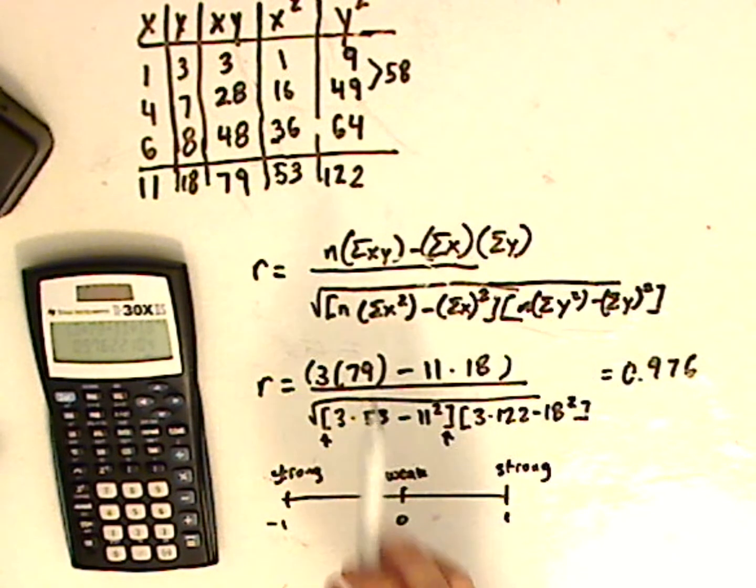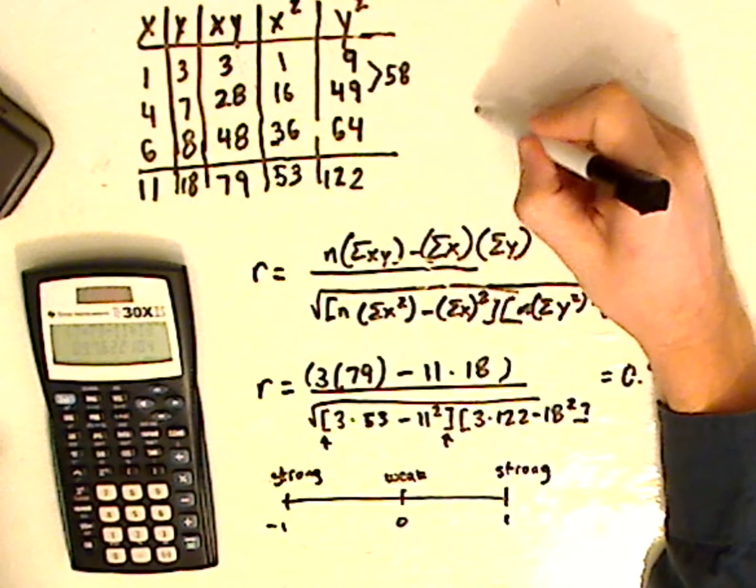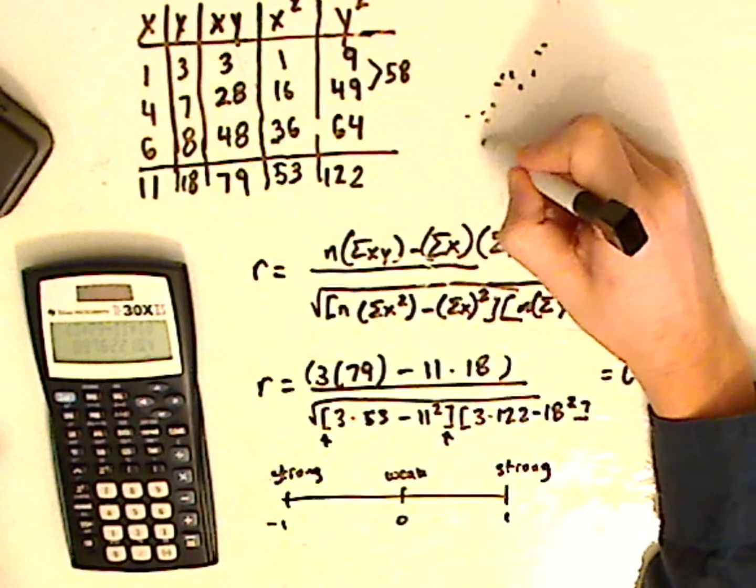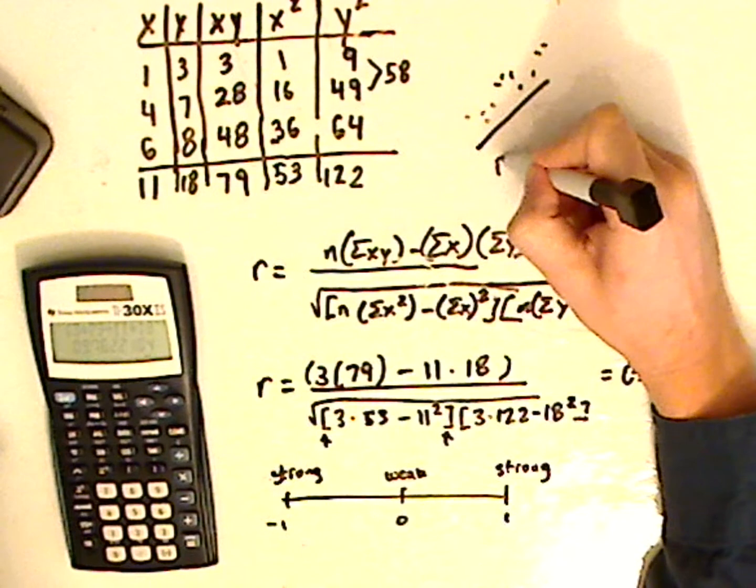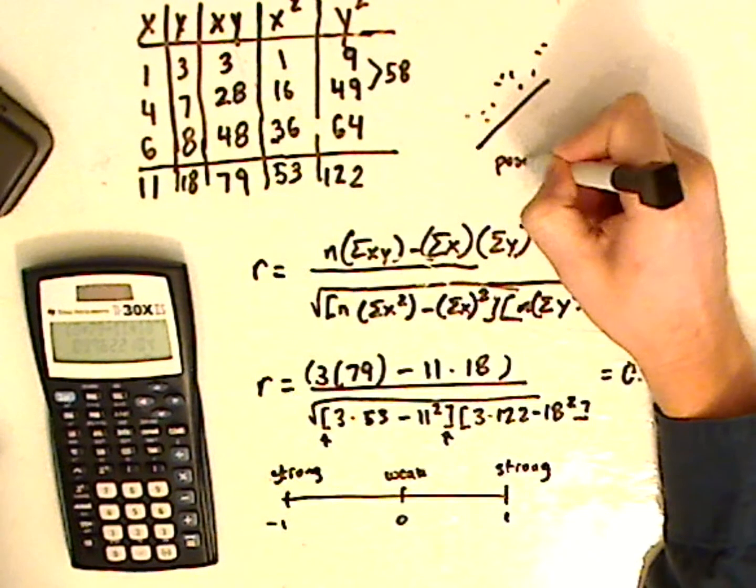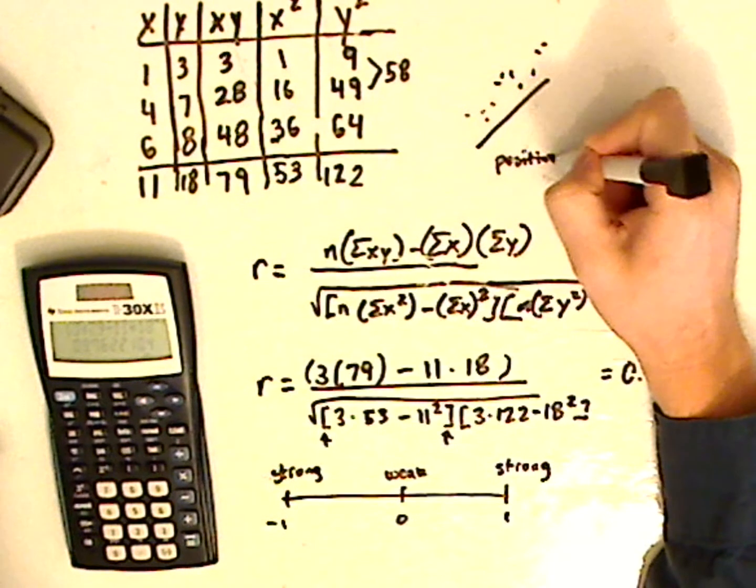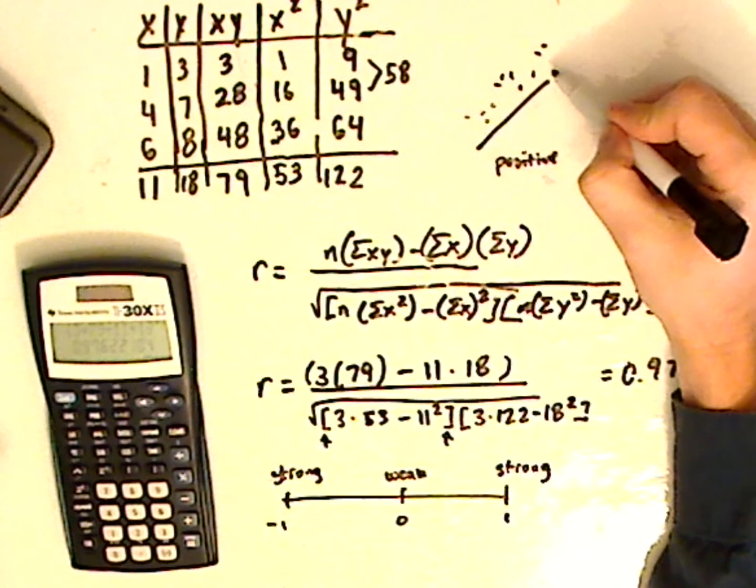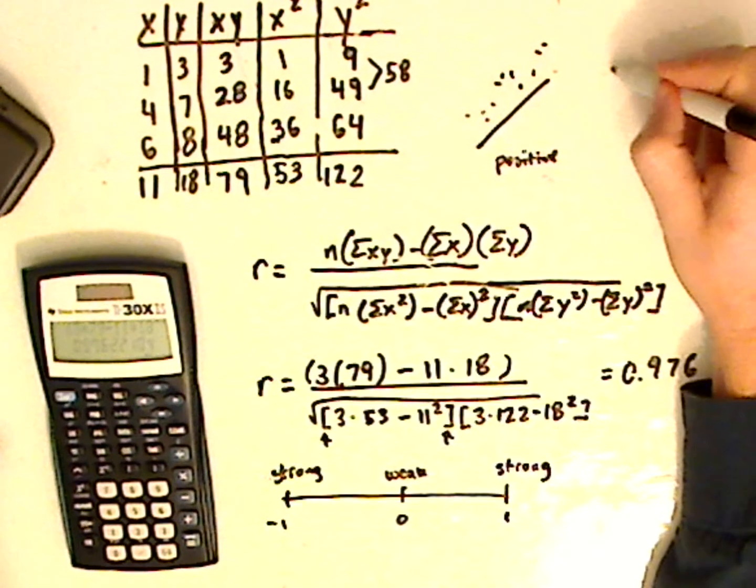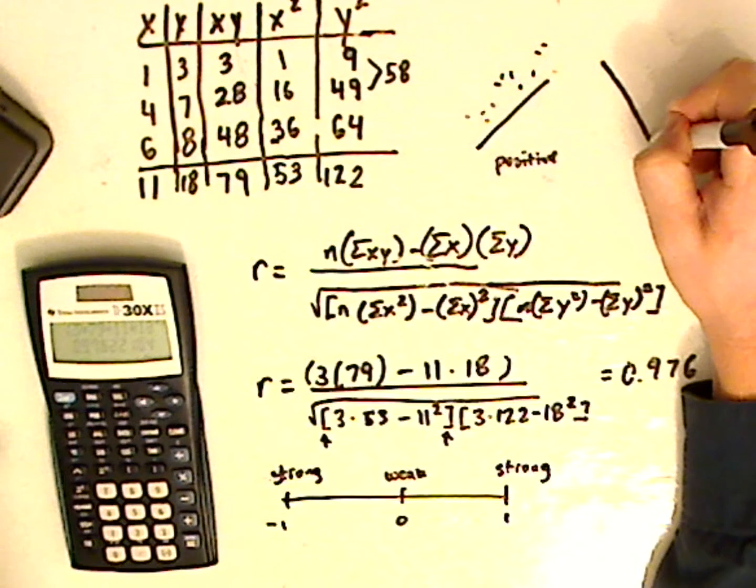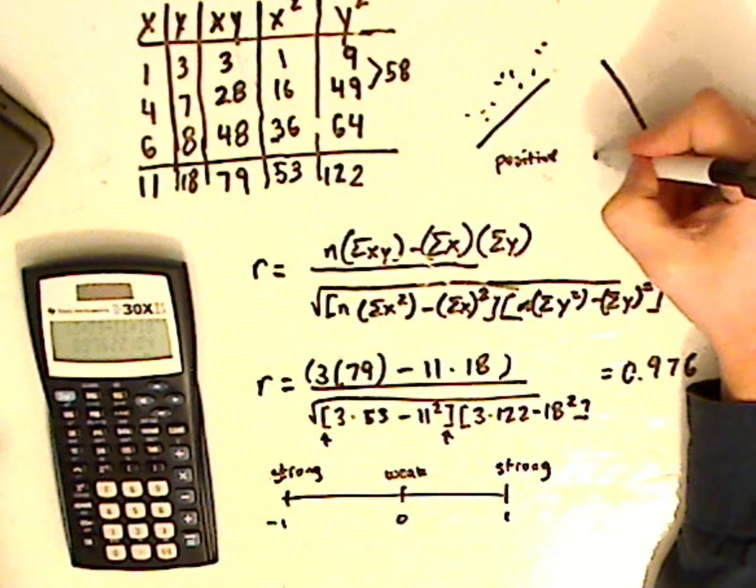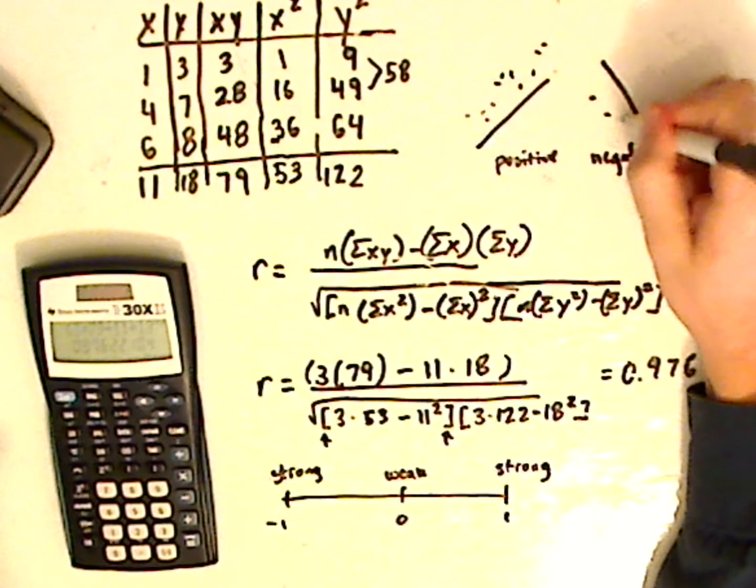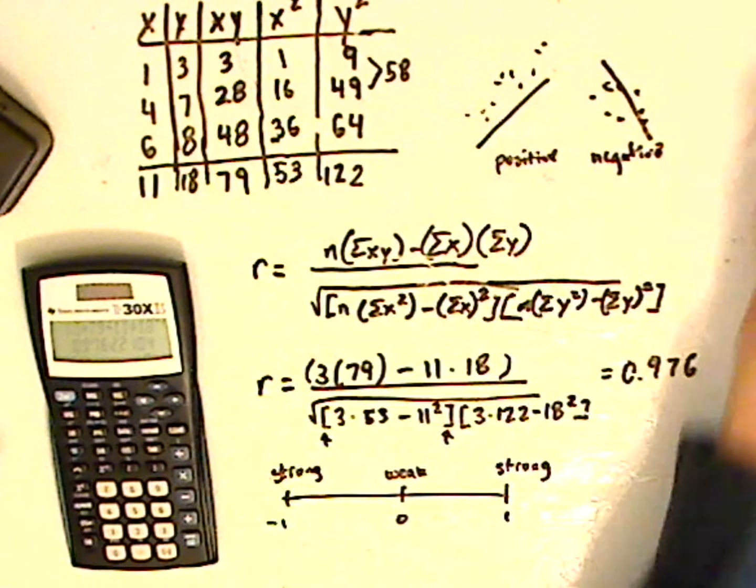And you can either have a positive linear relationship or a negative linear relationship. And it deals with how the line is. So if you have all these points that go like this, that would be a positive relationship. It's similar to slope. So if you remember that when slope is positive, it's increasing from left to right. When the slope is negative, it's decreasing from left to right.